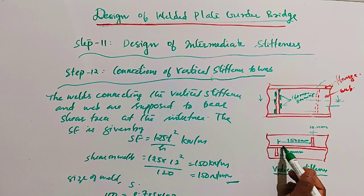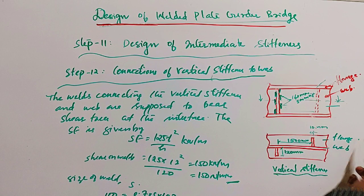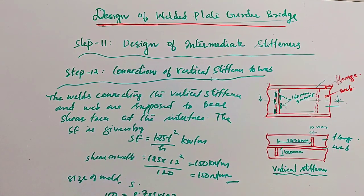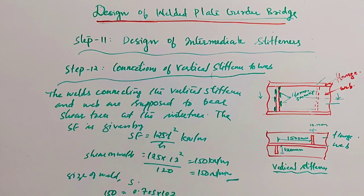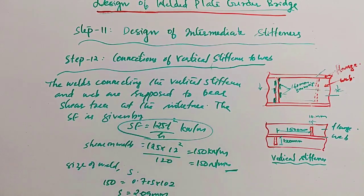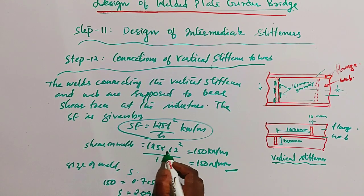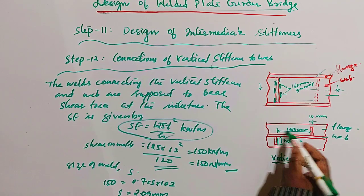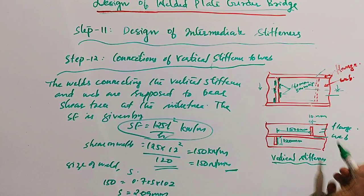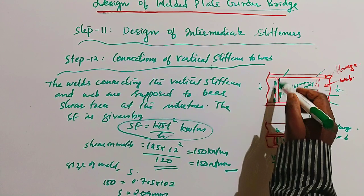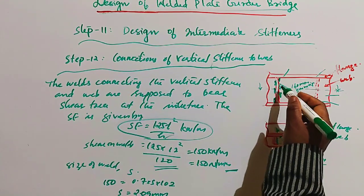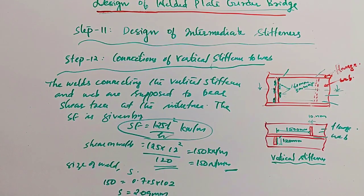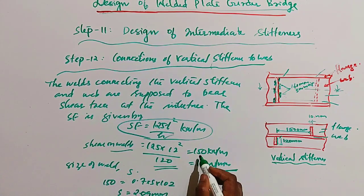Step 12: Connection of vertical stiffener to web. The weld connecting the vertical stiffener and web must carry the shear force at the interface. The shear on the weld is given by: q = 125t² / h, where t = 12 (web thickness) and h = 120 (outstand). The spacing is 1500 mm. The figure shows the flange, web, intermediate stiffener, and the connection weld. We need to find the size and length of the weld.